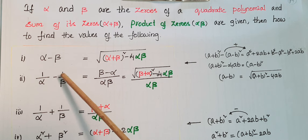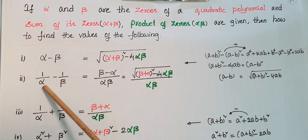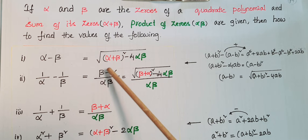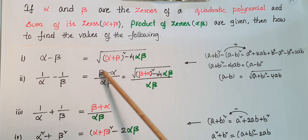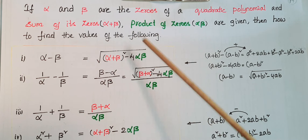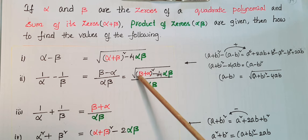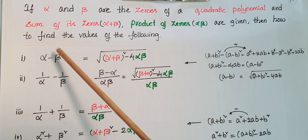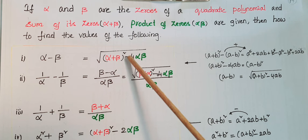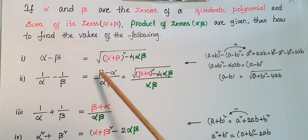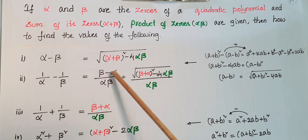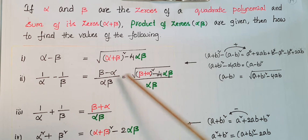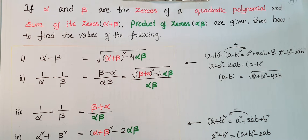Next, 1/α minus 1/β: take the LCM of alpha and beta, that is alpha·beta, giving (beta minus alpha) by alpha·beta. We can write beta minus alpha as square root of (beta+alpha)² minus 4·alpha·beta, so 1/α minus 1/β equals square root of (alpha+beta)² minus 4·alpha·beta, all divided by alpha·beta.